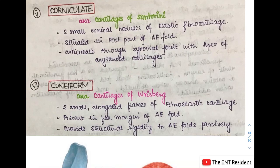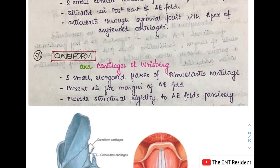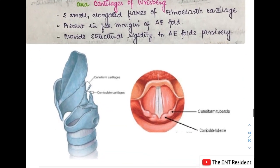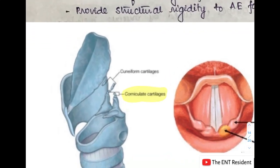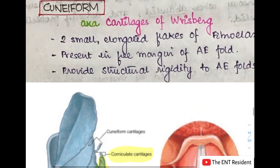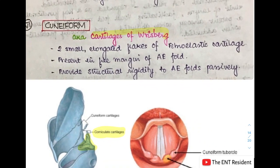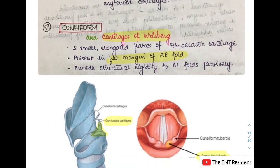The last two paired cartilages are the corniculate cartilage, also known as the cartilage of Santorini, and the cuneiform cartilage, also known as the cartilage of Wrisberg. The corniculate cartilages are two very small conical nodules of elastic fibrocartilage situated in the posterior part of the aryepiglottic fold; they articulate via a synovial joint with the apex of the arytenoid cartilage. The cuneiform cartilages are two small elongated flakes of fibroelastic cartilage present in the free margin of the aryepiglottic folds, helping provide structural integrity to those folds.